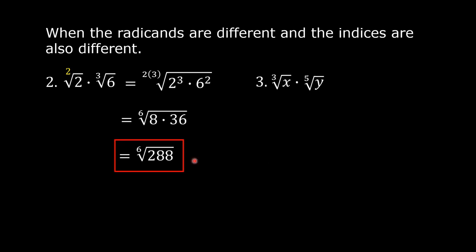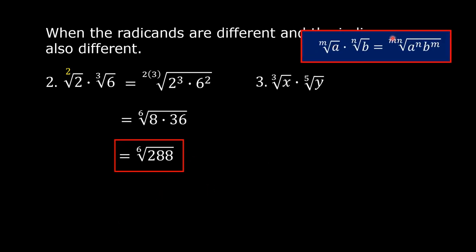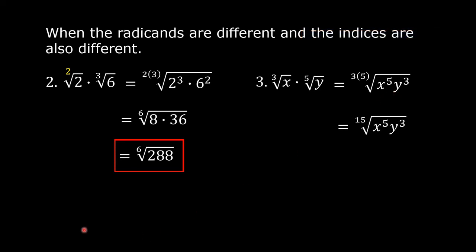Again, follow the rule. Multiply the index of the first by the index of the second to get the index of the product. Then the radical of the first raised to the index of the second, times the radical of the second raised to the index of the first. Following the rule, we have 3 times 5, then x raised to the 5th times y cubed. So 3 times 5 is 15, giving us the 15th root of x to the 5th times y cubed.